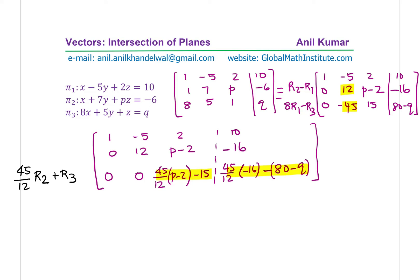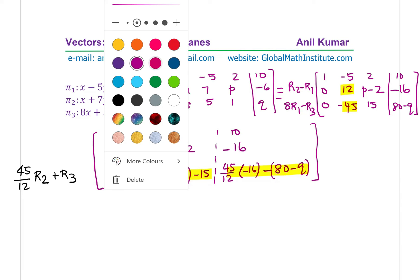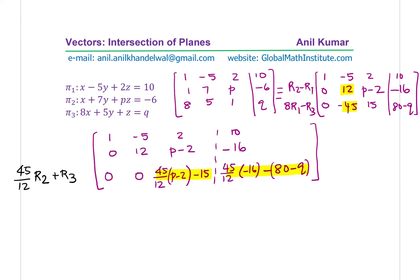Let's solve this now. We have 45 over 12 times (P-2) minus 15. We want to make it equal to zero. So we get P-2 equals 15 times 12 over 45. We can simplify this: 15 goes three times and that goes four times. We get four here. So the value of P is equal to 4 plus 2, which is 6. So the answer is that P should be equal to 6.